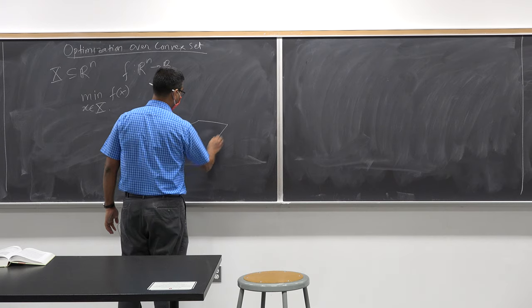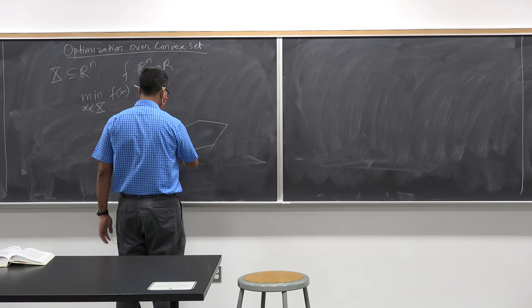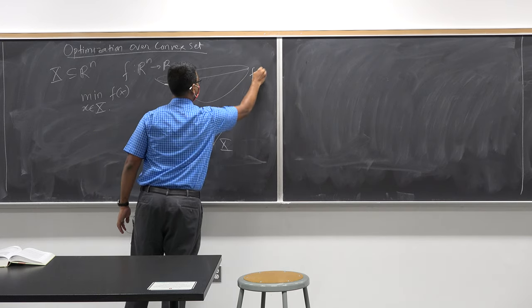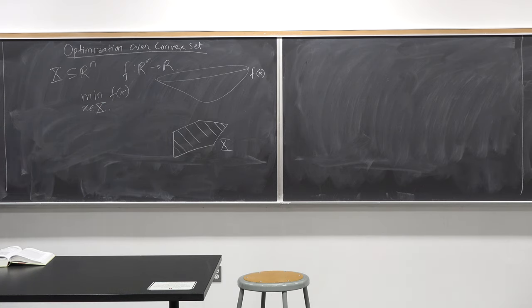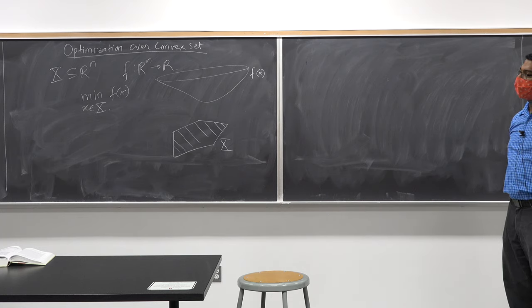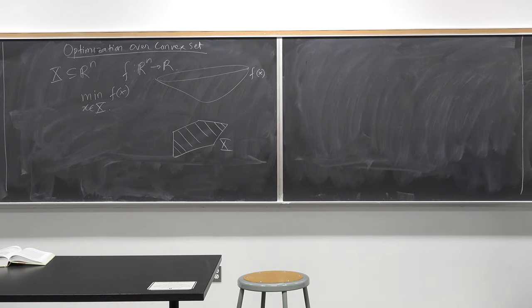I have a function with a convex set — this is my capital X — and I want to minimize this function over this set. Just like we did for optimization over the entire Euclidean space, we will first define what it means for a point to be a minimum over a convex set, and then we will identify necessary and sufficient conditions for optimality.